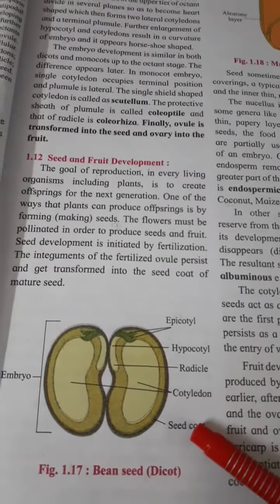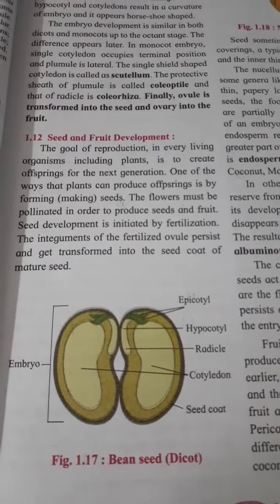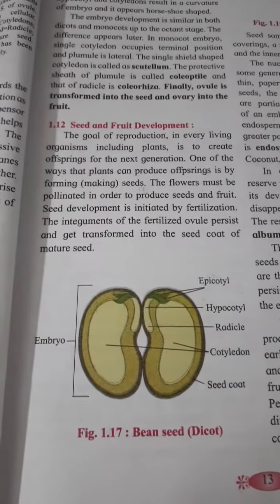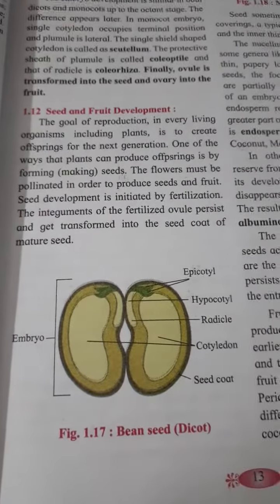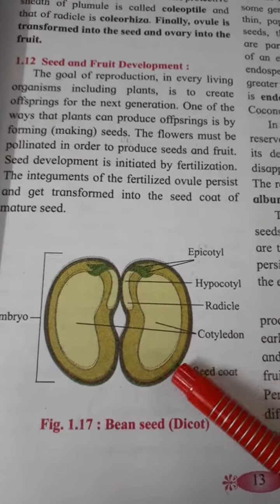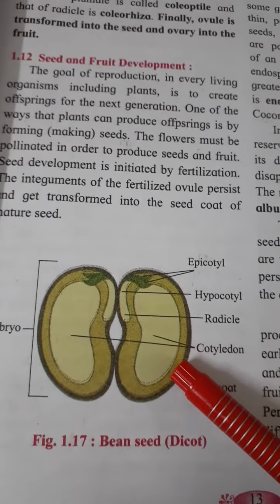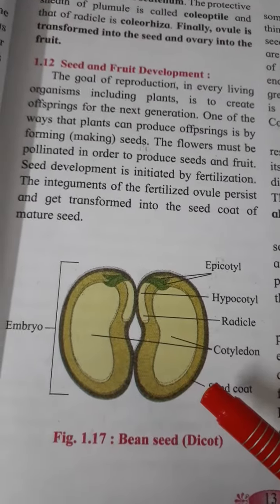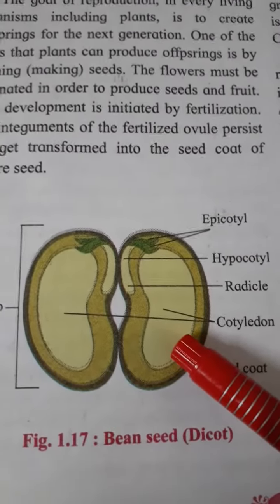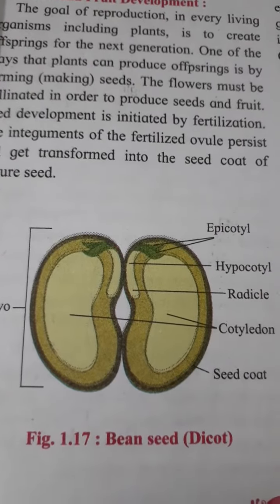So during post-fertilization changes, there is formation of seed as well as fruit. During this formation, in the embryo, the outer wall becomes mostly thick and produces the seed coat. In this way, the ovule is converted into a dry, hard seed and the ovary is converted into fruit.